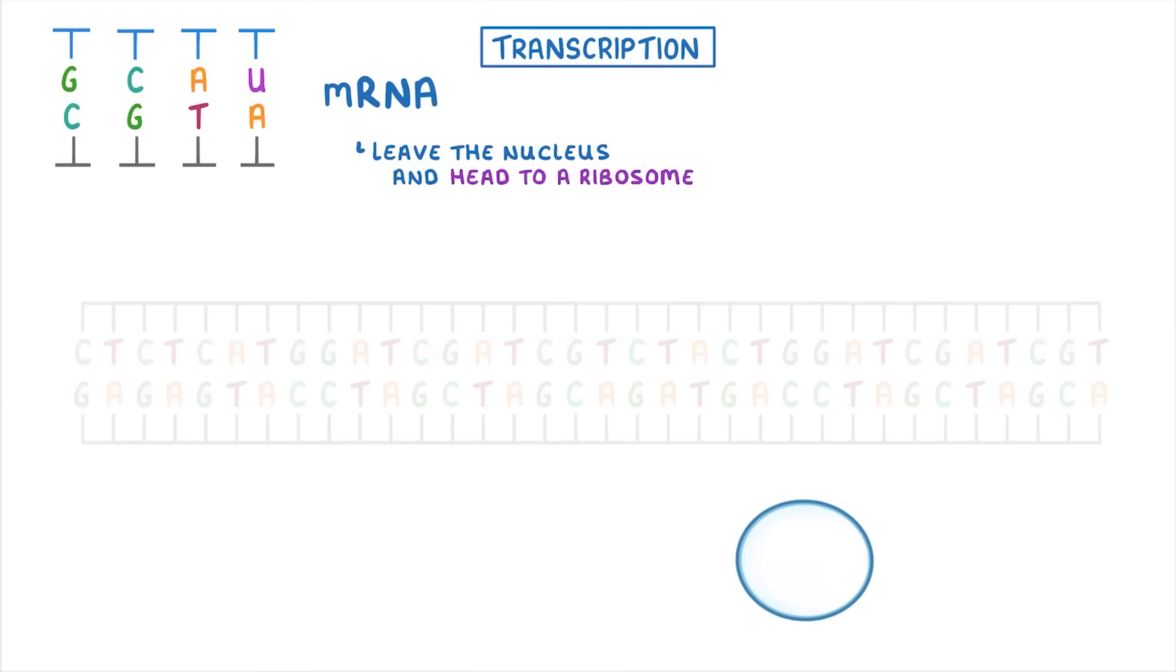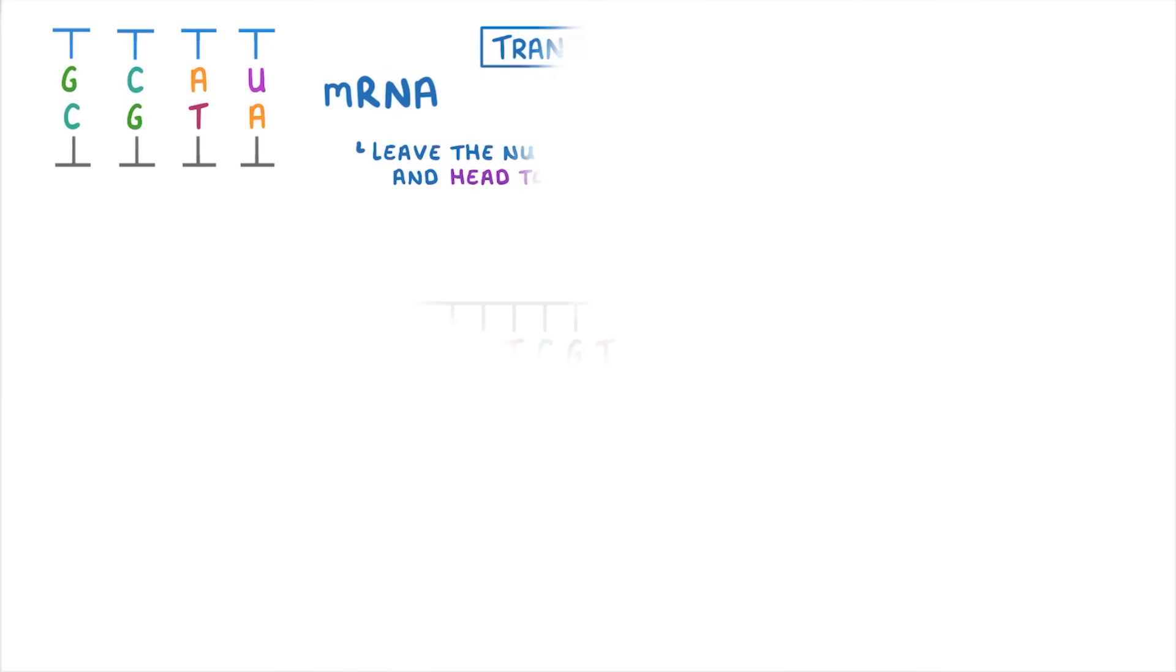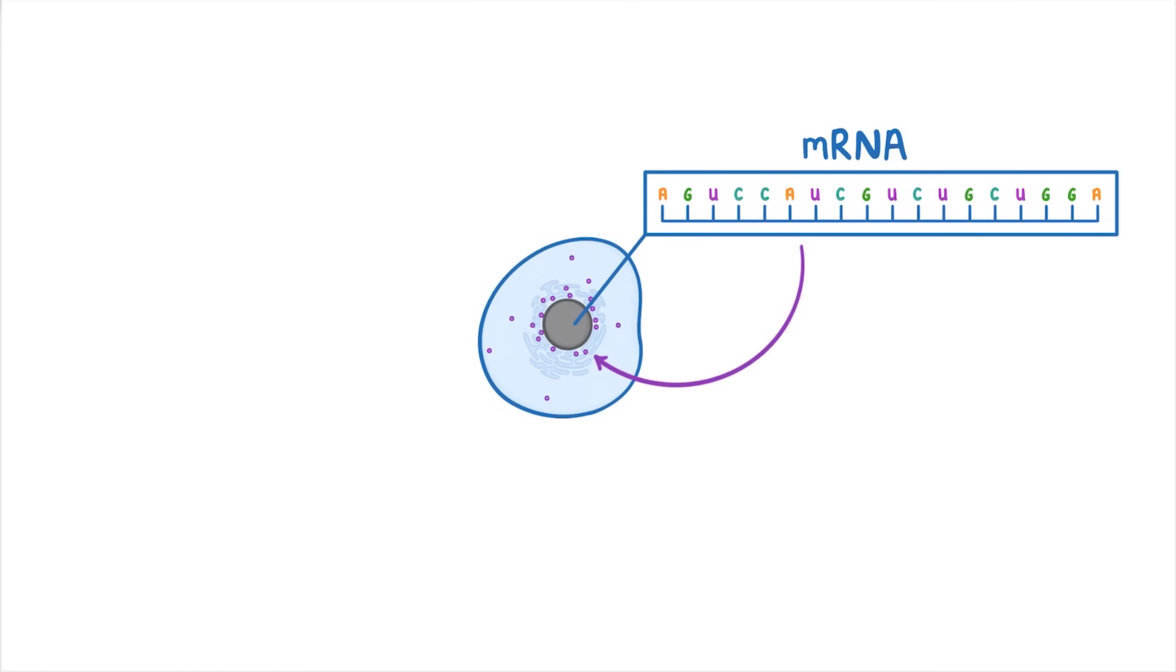This means we're left with an mRNA that's then free to leave the nucleus and head off to the ribosome. One last thing to mention is that this strand of DNA, which the RNA polymerase moved along, is called the template strand. So it's the template strand which is used to make the mRNA. So going back to our whole cell for a minute, we've now got an mRNA copy of the gene here inside the nucleus, which is free to leave the nucleus and make its way to the ribosome, where it can undergo translation to produce a protein.